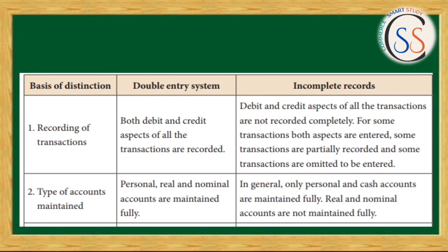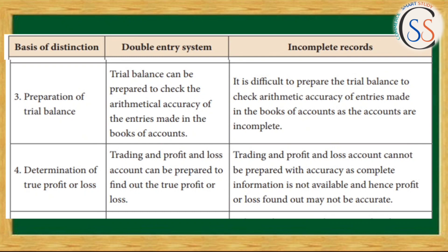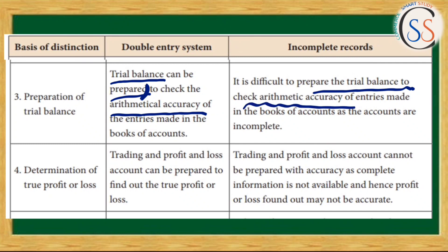The third difference is preparation of trial balance. In the Double Entry System, trial balance can be prepared, which helps check mathematical accuracy. In the Single Entry System, it is difficult to prepare the trial balance, so we cannot check mathematical accuracy.